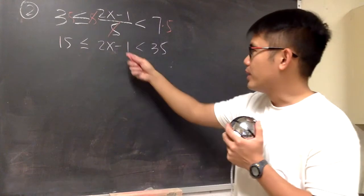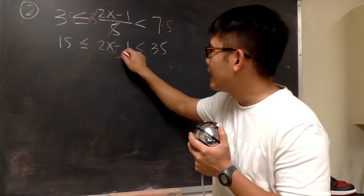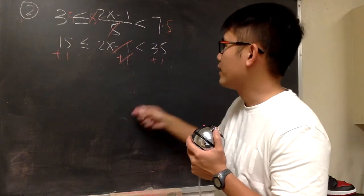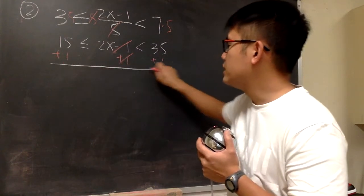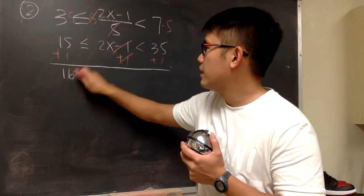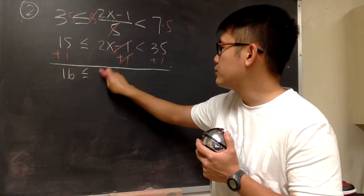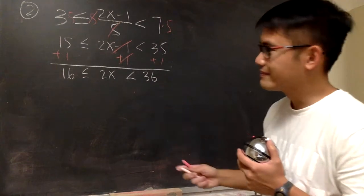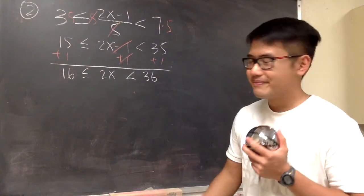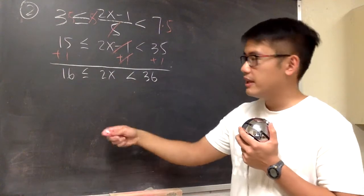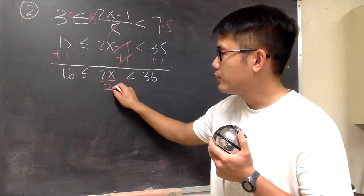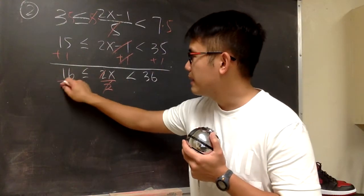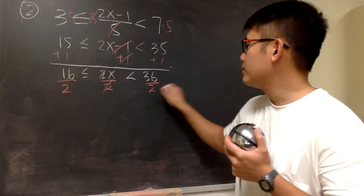Next, we need to get rid of the negative 1, so we add 1 to all three sides to cancel it. That gives us 16 on the left, 2x in the middle, and 36 on the right, while maintaining both inequality symbols. Then, since this is 2 times x, we divide all three parts by 2.